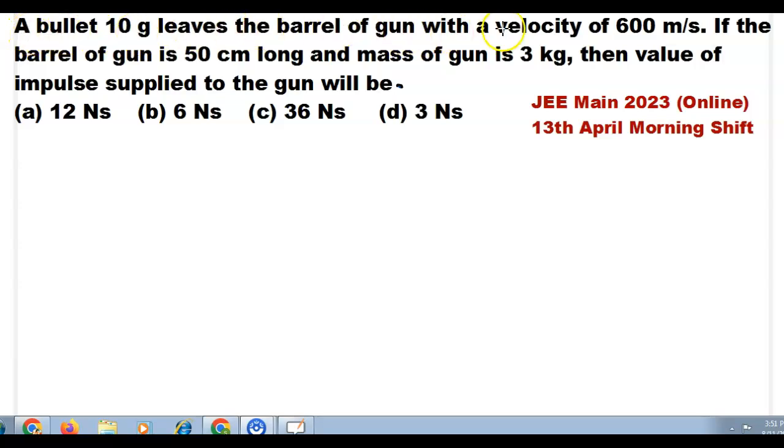A bullet 10 gram leaves the barrel of the gun with a velocity of 600 meter per second. If the barrel of the gun is 50 centimeter long and the mass of the gun is 3 kg, then the value of impulse supplied to the gun will be.